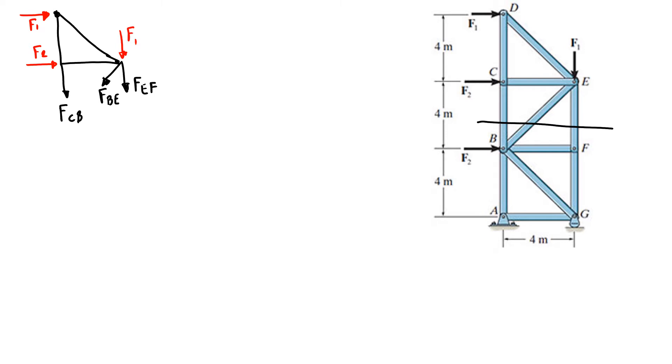I'm going to find first my force FCB. I'll do the sum of moments around joint E, counterclockwise is positive, equals 0. I'm choosing the moment around E because this will eliminate FBE and FEF. I have 4 meters and 4 meters. So I have FCB times 4 minus F1 times 4 equals 0.